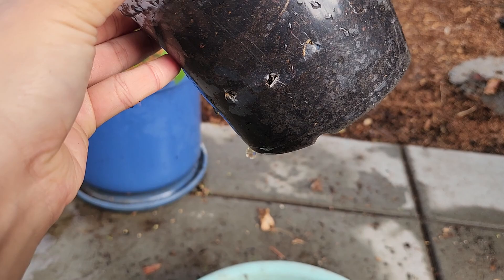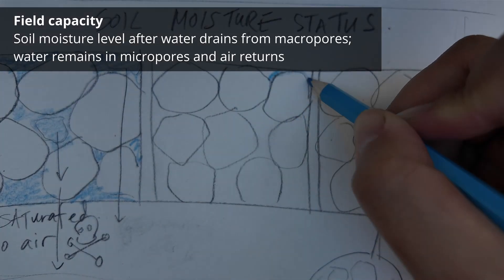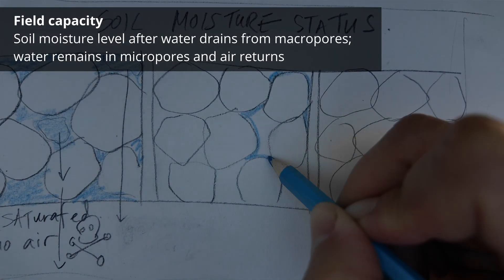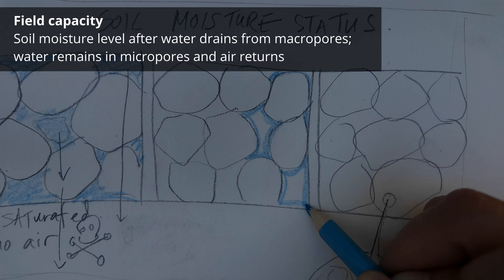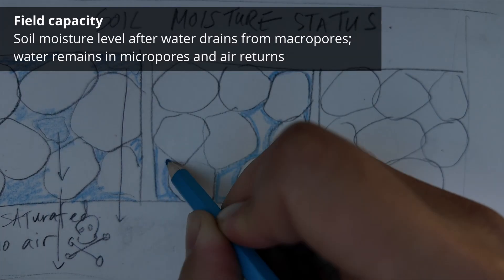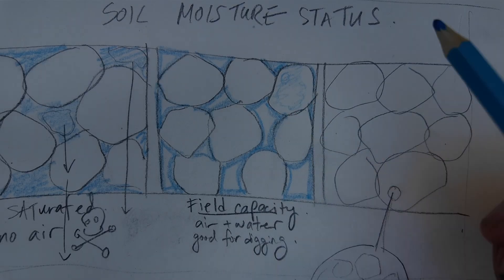After the gravitational water drains out, the soil is at field capacity. The air can come back to the macropores, but there's still water being held inside the micropores for plants to use.